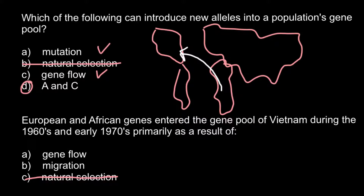So that leaves two answers: gene flow or migration. Was this migration? Of course not, because migration means that masses of people or animals move to a new area, stay there, and mix with other representatives of their species. We cannot say that the Vietnam War was migration, so we can cross out that answer. This was a classical example of gene flow.